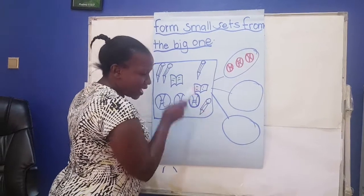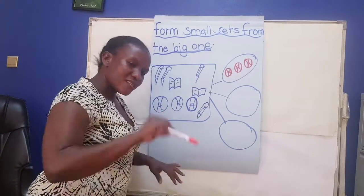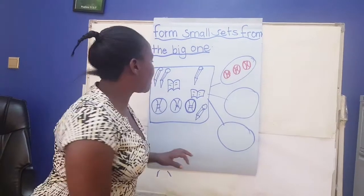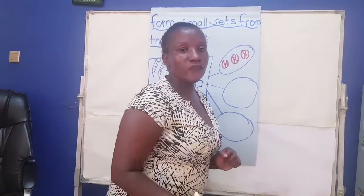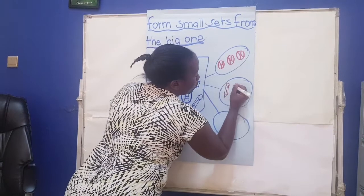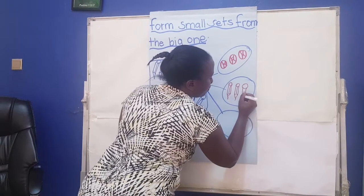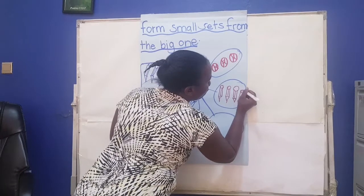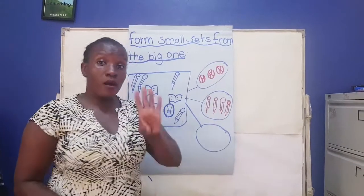There is another one hidden on this side. So you should be keen whenever you're making small sets from big sets — they can hide one object somewhere. You should always look carefully and count them properly, then make your set. Let's count: one, two, three, four. Therefore, four pencils. Let's draw the four pencils: one, two, three, four pencils. Let's count them — one, two, three, four. They are four pencils.